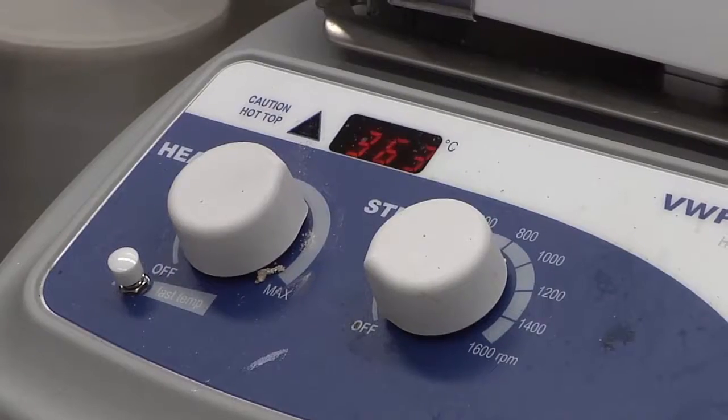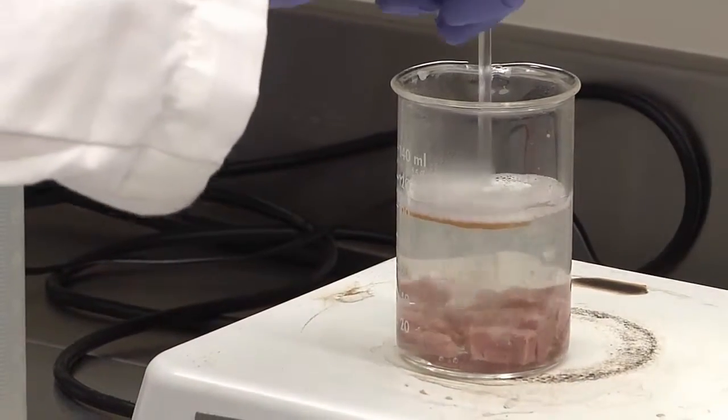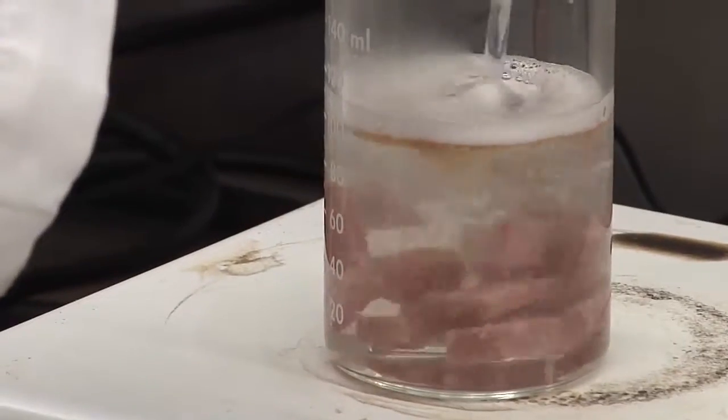Place the beaker on the hot plate and heat until rolling boil. Stir occasionally with a glass rod so that the product does not clump or stick to the side of the beaker.